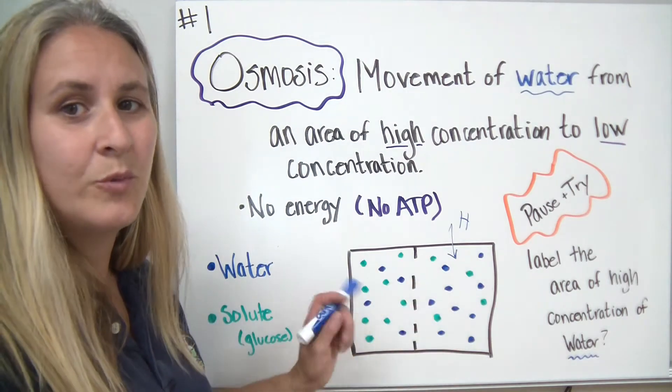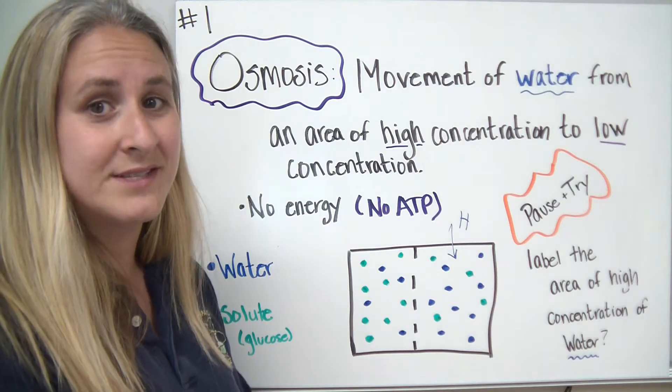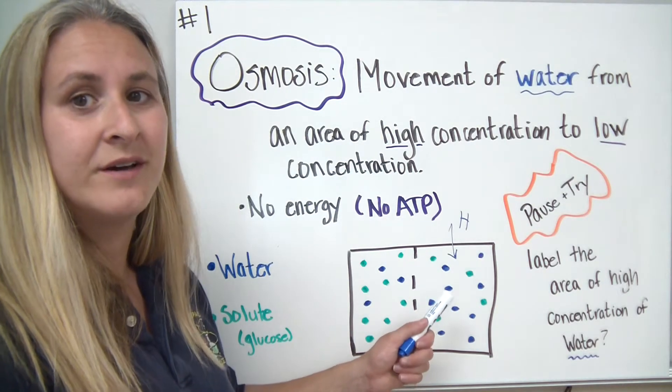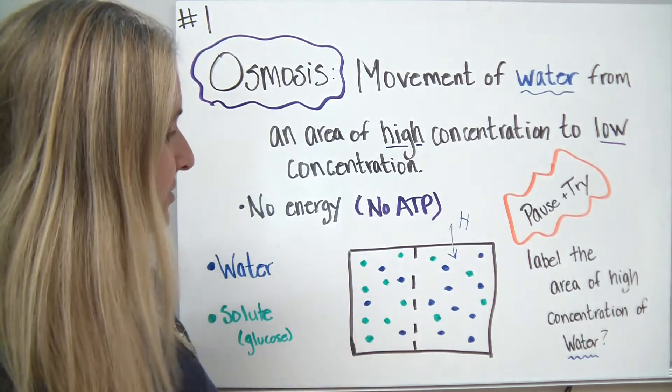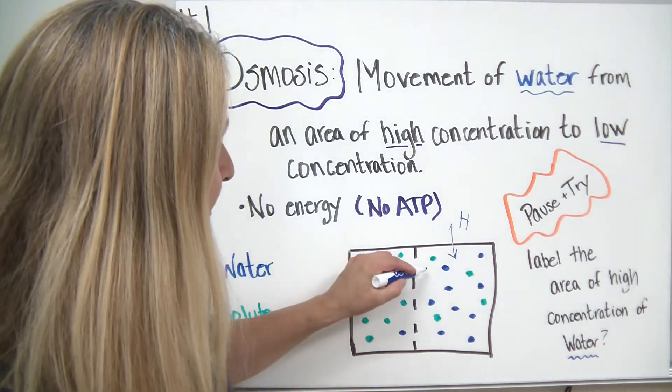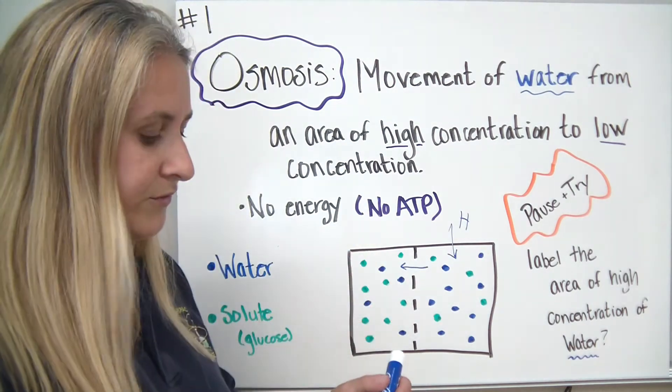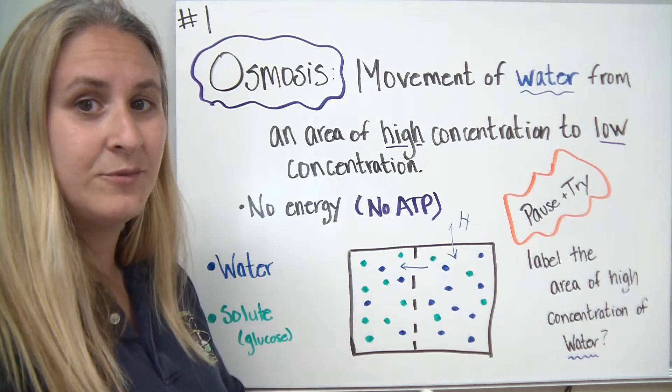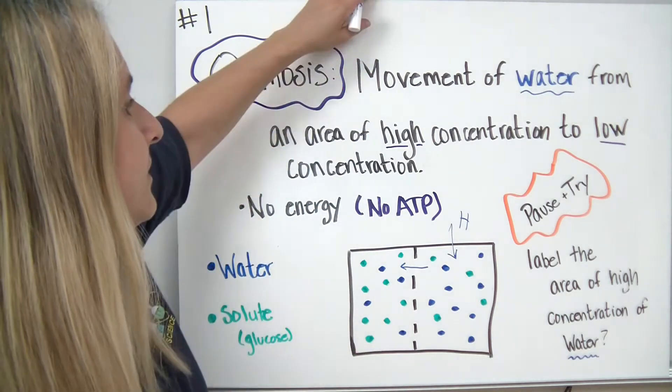Which way would the water move if it were to move based on osmosis? The water would move from an area of high concentration to low concentration. So in this scenario, we would move from right to left until it was equal. Remember, that term was equilibrium.